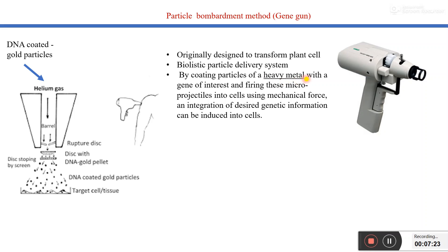By coating particles of a heavy metal with a gene of interest and firing these micro-projectiles into cells using mechanical forces, integration of the desired genetic information can be induced into the cell. When these micro-projectiles enter inside the cell, they go to the nucleus, where the DNA separates from the gold particle and integrates into the genome of the plant cell. After integration, it shows its application, and by this way transgenic lines of plants can be developed very easily.